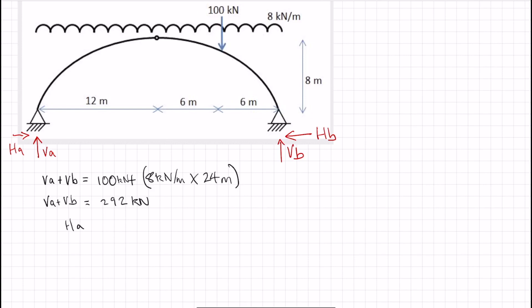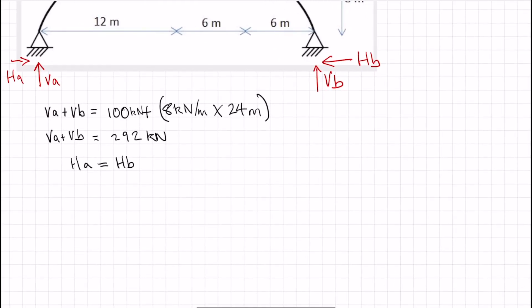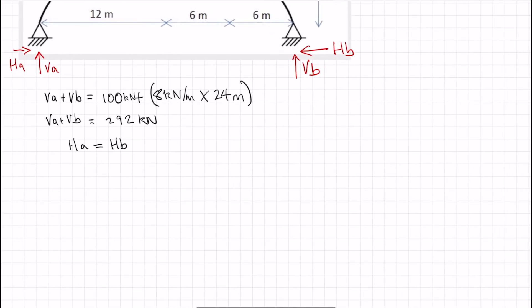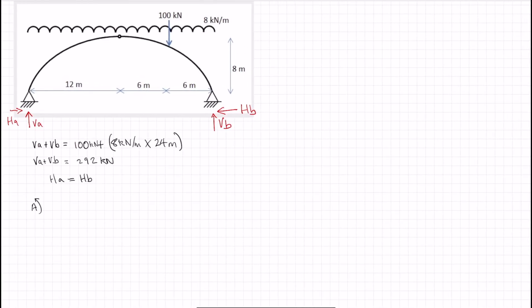And I've just said for horizontal equilibrium, the HA must equal HB. So how do we try and resolve either of the vertical ones or the horizontal? Let's try and do the vertical ones first. And let's take moments about point A, which is that left-hand support.